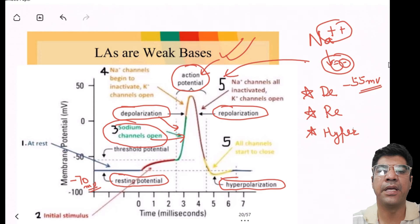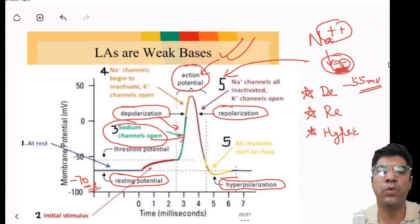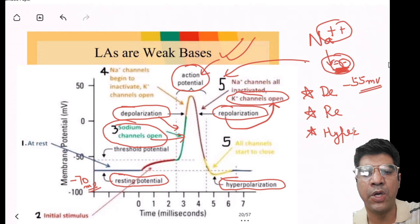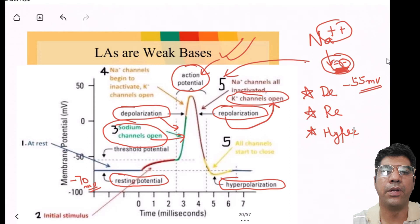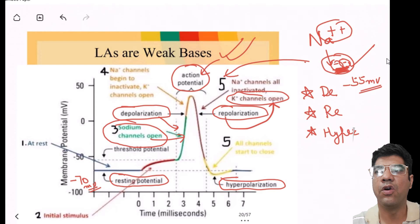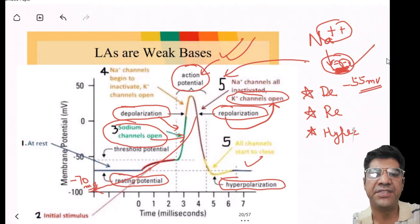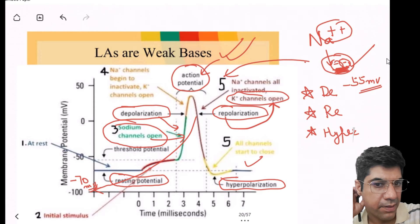After depolarization, the neuron undergoes repolarization to restore the negative charge inside. Repolarization is achieved through the opening of potassium channels, allowing potassium to leave the neuron, which restores the negative charge and brings the membrane potential back to the resting state of around minus 70 millivolts.